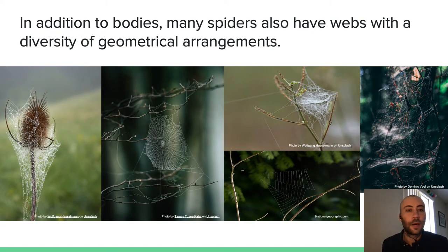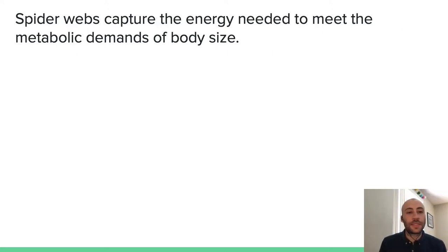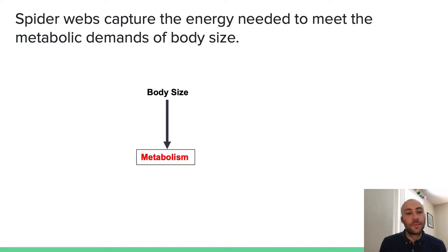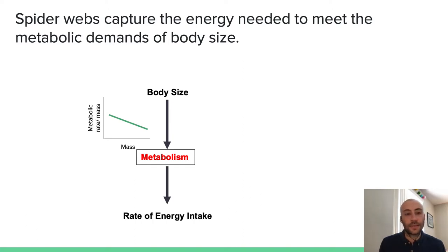In addition to bodies, many spiders also have webs with a diversity of geometrical arrangements. Spider webs are critical because they capture the energy needed to meet the metabolic demands of body size. Body size more or less determines metabolism, and metabolic rate per unit mass declines at approximately the negative one-third to negative one-quarter power as a function of mass. Metabolism should set the baseline for the rate of energy uptake from the external environment, which should then meet those metabolic demands of body size.